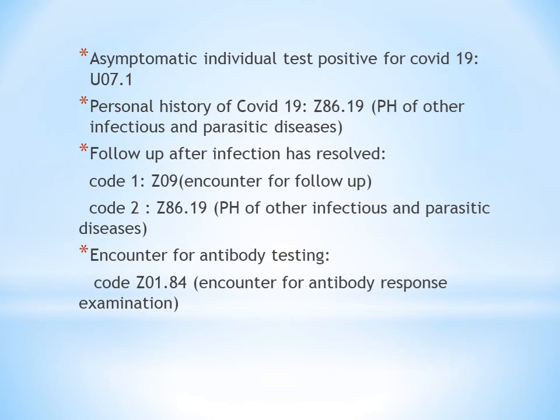Next is asymptomatic individual testing positive for COVID-19. Asymptomatic means no symptoms; symptomatic means with symptoms. Unlike HIV, where we have different codes — symptomatic HIV is B20 and asymptomatic is Z21 — for COVID-19 you do not have different codes. You use the same code U07.1 for both asymptomatic COVID-19 and symptomatic COVID-19.